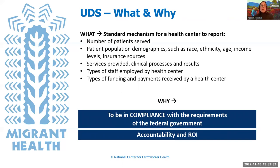The UDS stands for Uniform Data System, which is a government-required electronic reporting mechanism for health centers funded under the Public Health Service Act Section 330 — including community health centers, programs for migrant health, health care for the homeless, and residents of public housing. Reported items include the number of patients served, patient population demographics, services provided, types of health center staff employed, and types of funding and payments received. There are two main reasons to report in the UDS: compliance with federal government requirements, and accountability and return on investment — showing the government that funding is being used responsibly.